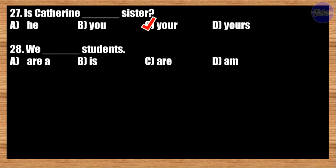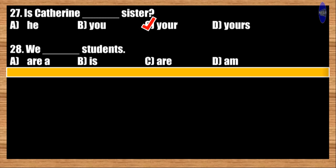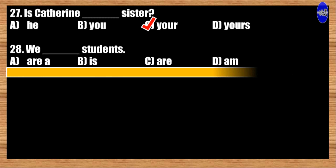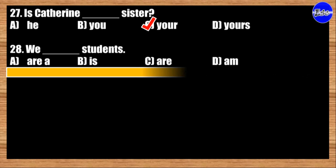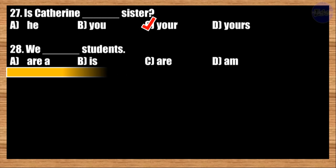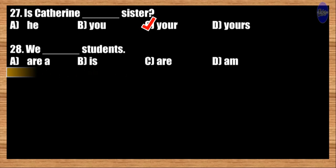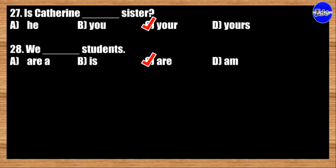Number twenty-eight: We blank students. A: are, a; B: is; C: are; D: am. The best answer is option C. We are students.